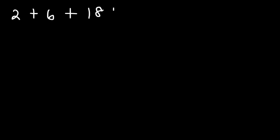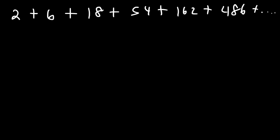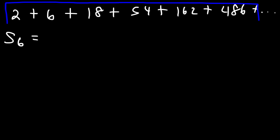Let's try another example. Let's say we have the series 2, 6, 18, 54, 162, 486, and we'll stop there. Go ahead and find the sum of the first 6 terms. We just need to add those 6 numbers: 2 plus 6 plus 18 plus 54 plus 162 plus 486. That's 728.